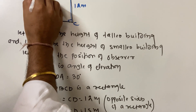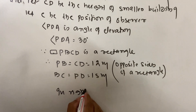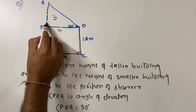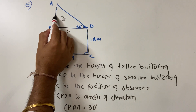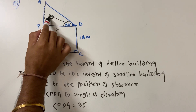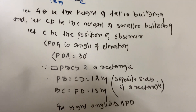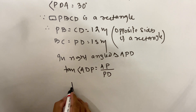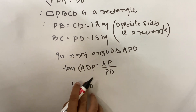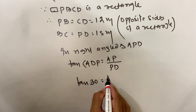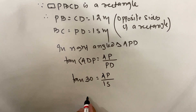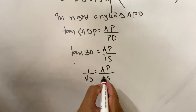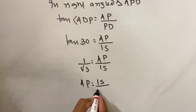Now we go with triangle APD. In right angle triangle APD, tan(angle ADP) = opposite side AP upon adjacent side PD. So tan 30 = AP upon 15. Tan 30 is 1 upon root 3. So 1 upon root 3 = AP upon 15. Do cross multiplication: AP = 15 upon root 3.